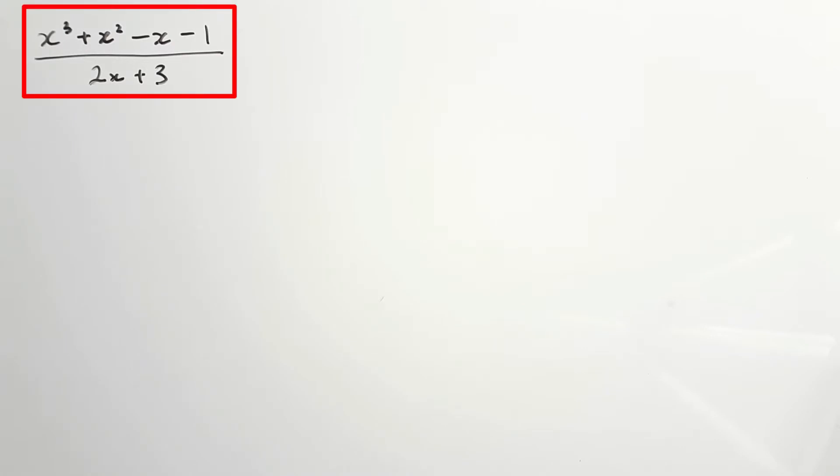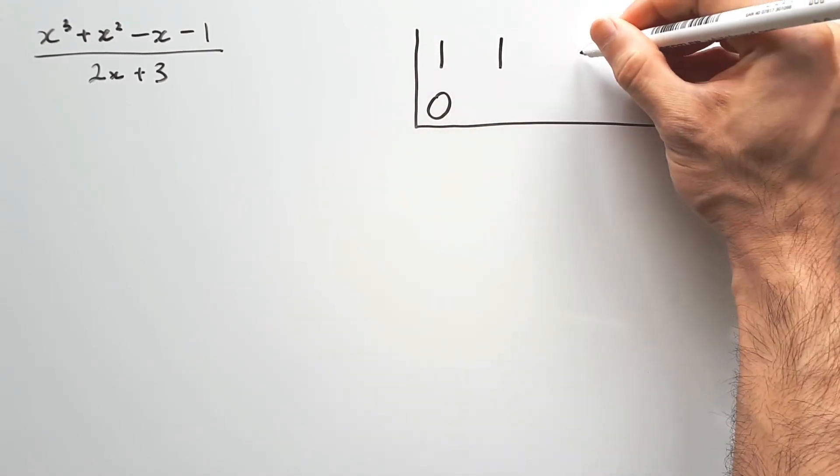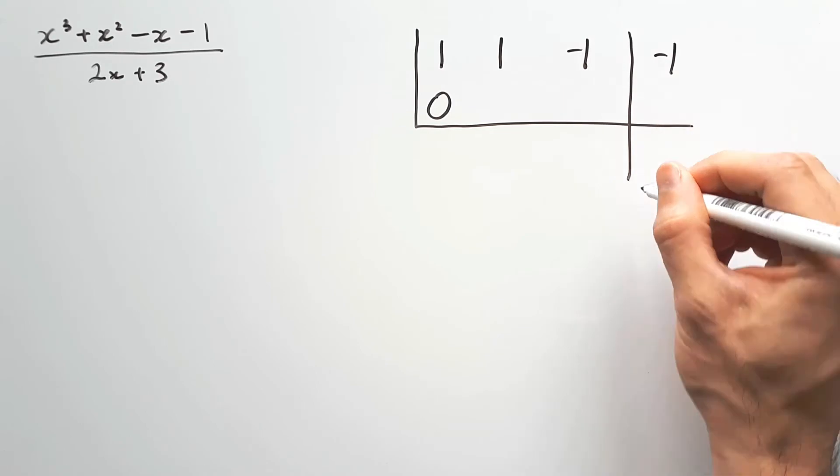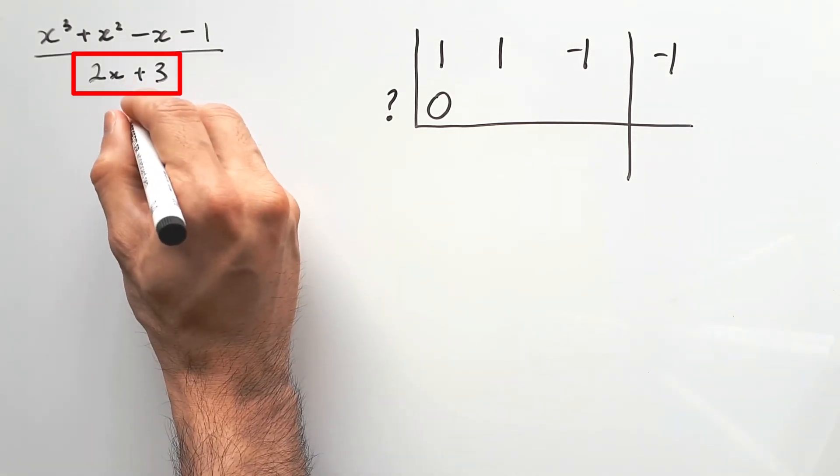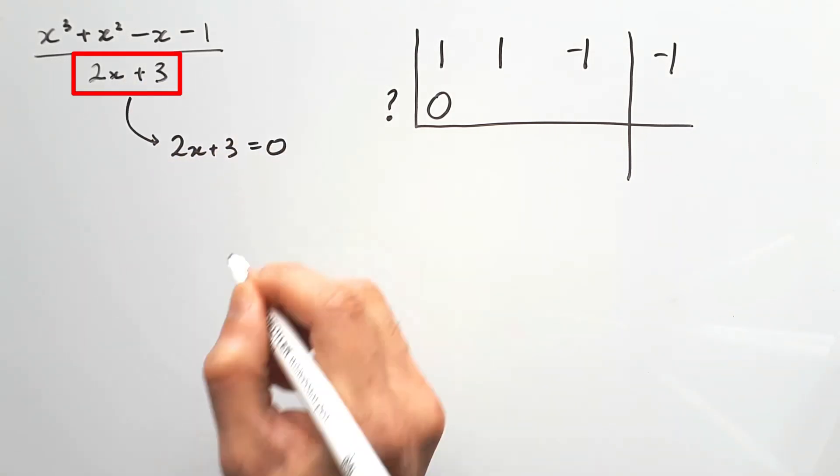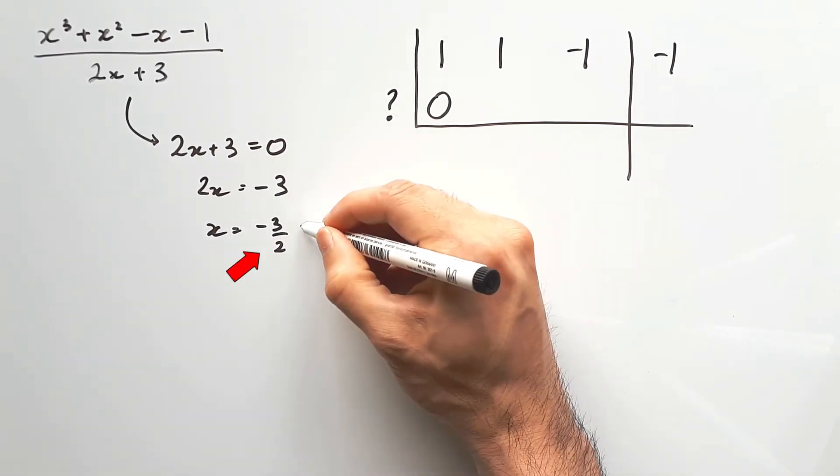So here we have x cubed plus x squared minus x minus 1 divided by 2x plus 3, which is a non-monic because of the 2. So let's just set up our synthetic division bracket and numbers first. Everything here is still done the same way, with one exception. The divisor that we put outside will be a little bit different because we're not dividing a monic anymore. So looking at 2x plus 3, equate that to 0 and solve for x. That number, negative 3 on 2, that becomes your new divisor.